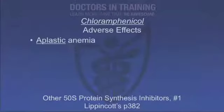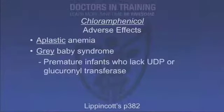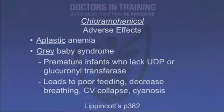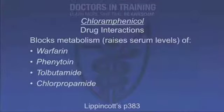Pharmacokinetics: oral or IV, very lipophilic, widely distributed, readily enters the CSF, metabolized by the liver to a glucuronide, then secreted by the kidneys. Adverse effects are the most important aspect: serious anemias — dose-dependent and can progress to aplastic anemia and be fatal. Gray baby syndrome occurs in premature infants who lack liver UDP-glucuronosyltransferase; drug buildup causes poor feeding, decreased breathing, cardiovascular collapse, and cyanosis. Drug interactions: inhibits hepatic mixed-function oxidases, blocking metabolism of warfarin, phenytoin, tolbutamide, and chlorpropamide.